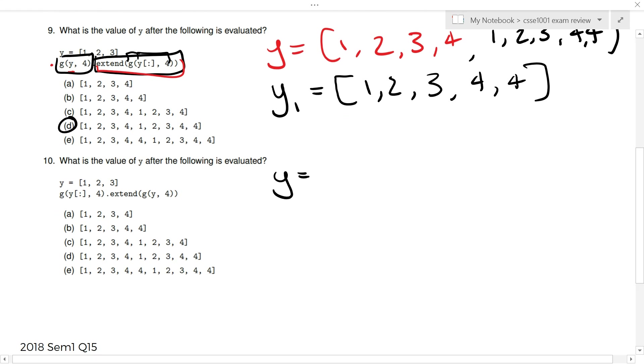Pen and paper. Remember, y equals 1, 2, 3. First thing. Left to right. G copy of y, 4. So, remember we're making a new list in memory. 1, 2, 3. And then we're adding a 4 to it. So far, so good. Then, we dot extend. We have a look at this end bit. G of y. So, we have a look at the original y over here. We add a 4 to it. And then we go add the first thing and the second thing together.